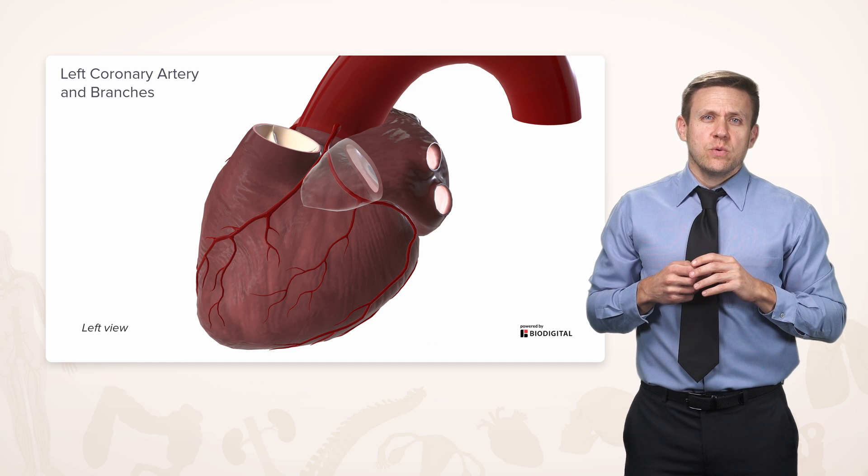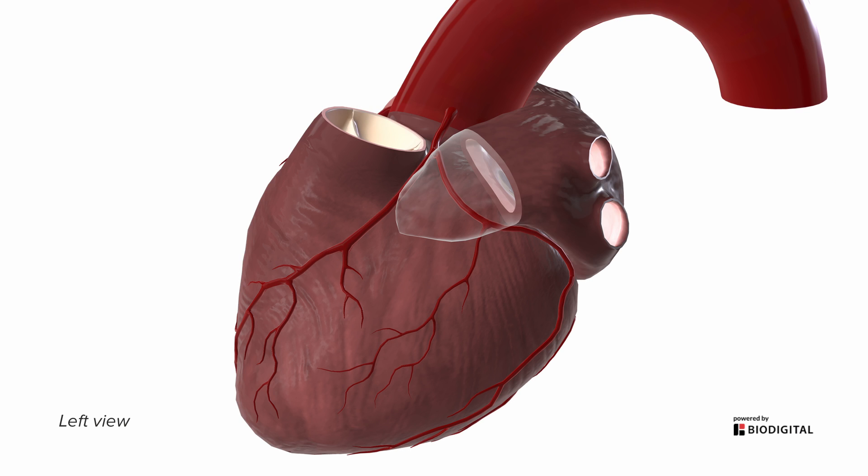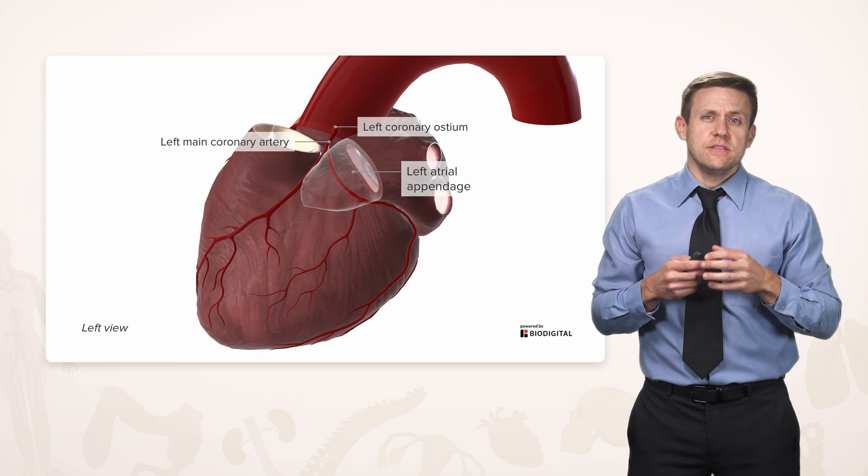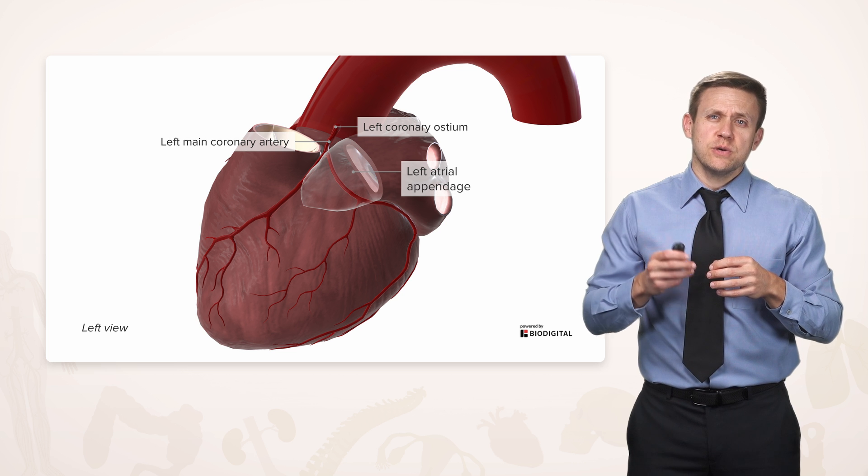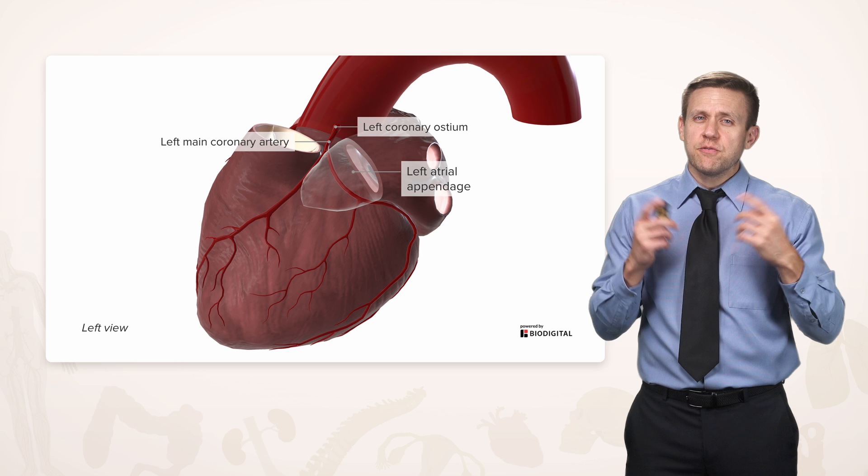On the other side, we have the left coronary artery and its branches. But in order to see that, we're going to have to fade out the left atrial appendage to really see what's going on. Here we have the left coronary ostium coming off of the aorta, giving rise to the left main coronary artery in the same sort of distribution that we saw for the right in that groove between atrium and ventricle, but it's going to be very short, only about a centimeter before it branches.